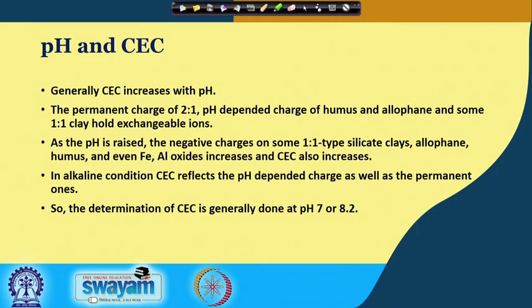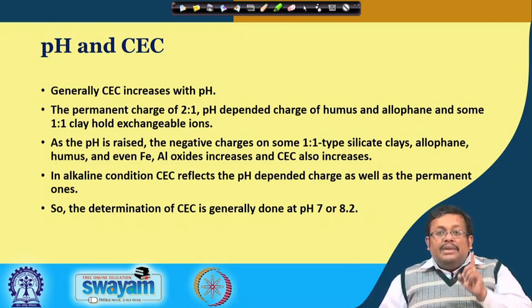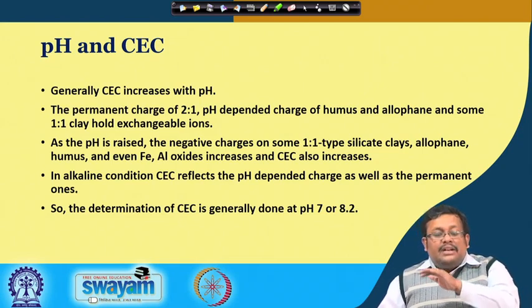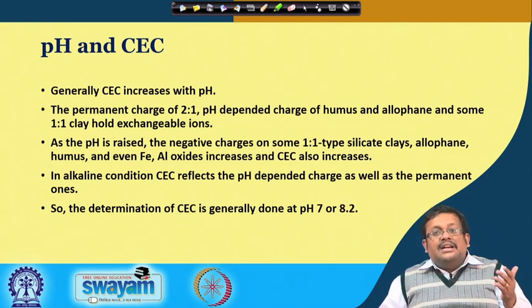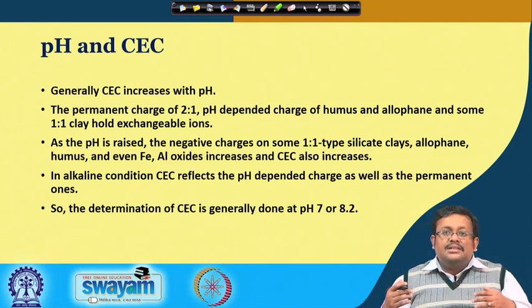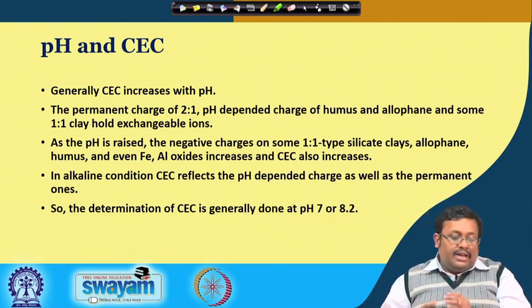What is the relationship between pH and CEC? Generally, CEC increases with pH. The permanent charge of 2:1 type of clay, the pH-dependent charge of humus and allophane, and some 1:1 type of clay hold exchangeable ions. As the pH is raised, the negative charge on some 1:1 type of silicate clays, allophane, humus, and even iron-aluminum oxides increases, and CEC also increases because increasing pH creates negative charge, which attracts cations to the soil or clay surface. So for 1:1 type of clay, allophane, and iron-aluminum oxides there will be an increase in CEC.